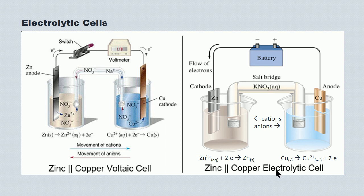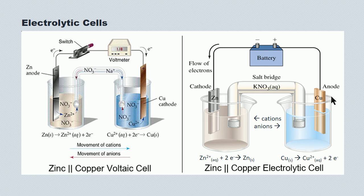On the right-hand side is the electrolytic cell. Instead of a load like a voltmeter, we have a battery attached to the system, and it's driving electrons to what should properly be the anode in the spontaneous reaction. It converts the anode into the cathode — the site of reduction — and zinc is being reduced at the cathode. What was the cathode in the voltaic cell is now the anode in the electrolytic cell, and copper is being oxidized into the copper-2 ion. There's a salt bridge, anions continue to flow to the anode, and cations continue to flow to the cathode. The applied voltage here has to be a minimum of 1.10 volts. Sometimes an over-potential is required, and we'll look at that today.